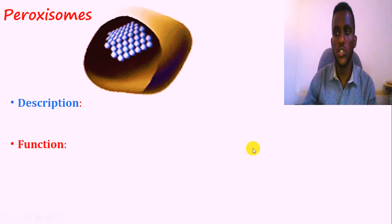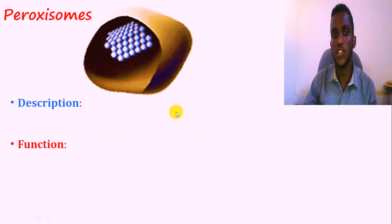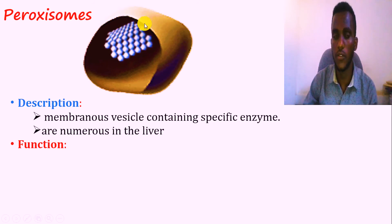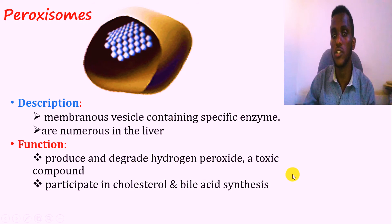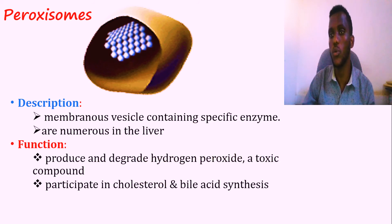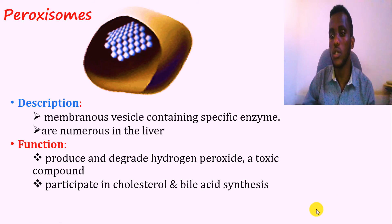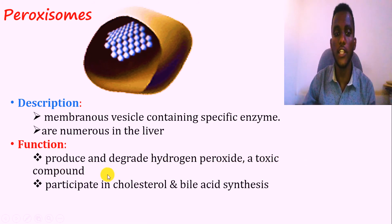The other organelle is peroxisomes. Peroxisomes are membrane-bounded vesicle-form structures containing specific enzymes. In the liver, they are important for the degradation of hydrogen peroxide into non-toxic and harmless components. For example, hydrogen peroxide is converted into water plus oxygen due to the release of the specific enzyme called catalase. In addition to this degradation, they are important for the synthesis of cholesterol or bile acids.